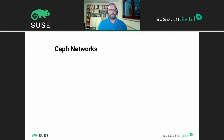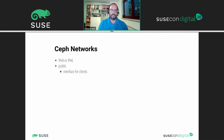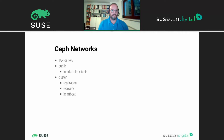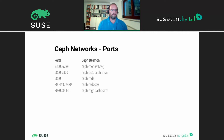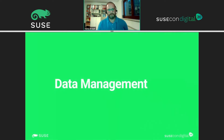If you take a look at the network side of Ceph, you have either IPv4 or IPv6 supported. There's always a public interface, which is the network to the clients, and you have a cluster network which handles all the replication data and everything needed around recovery, heartbeats, and so on. There are a number of ports required to run Ceph which are listed here — you probably need them to handle your firewall.